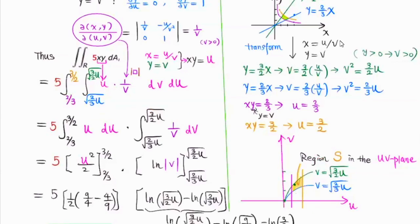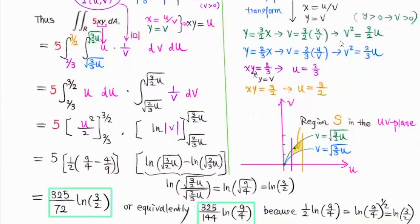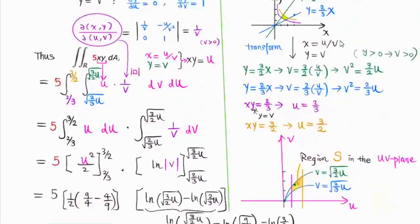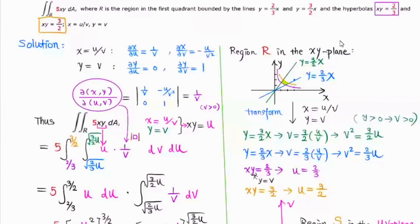So you're trying to transform this region into a region that is either type 1 or type 2 on the UV plane. Then we can calculate the Jacobian and follow the formula. For number 2, I actually did a different transformation than the one they gave in this exercise.